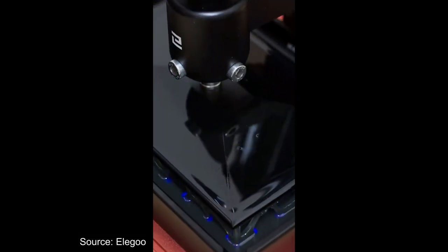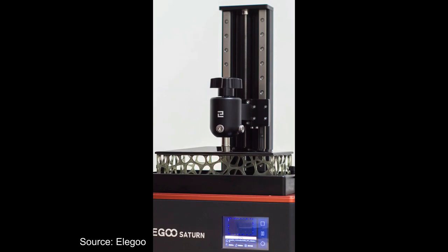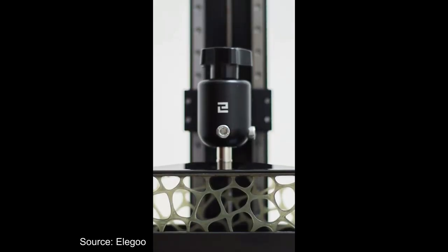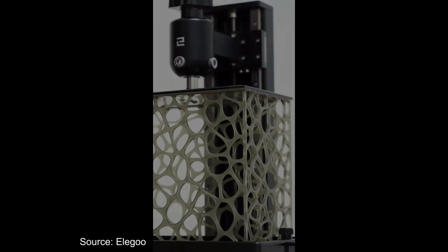Fabrication of these complex structures challenges traditional manufacturing processes, while 3D printing has the potential to take the job. Among 3D printing technologies, projection-based VAT photopolymerization, or VPP for short, is famous for its high accuracy and speed.